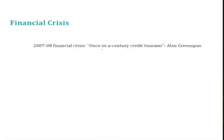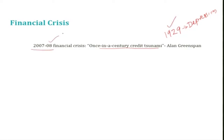You might have heard of the 2007-08 financial crisis, which is considered a once-in-a-century credit tsunami. Another major crisis occurred in 1929, considered the mother of all financial crises, which led to the Great Depression lasting for nearly one decade. This is one of the biggest financial crises, and we are more familiar with the recent 2007-08 financial crisis.